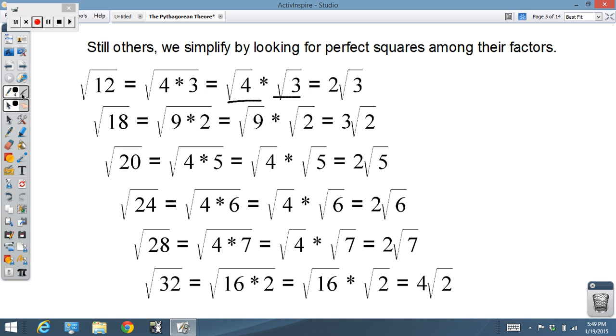Now there's a third category. Others we can simplify because we look for those perfect squares that we can take out, perfect squares that are among their factors. So for example, 12. Well, 12 is 4 times 3, and 4 is a perfect square. So if 12 is 4 times 3, the square root of 12 is the square root of 4 times 3, and that can be broken up into the square root of 4 times the square root of 3. And we know the square root of 4 is 2, so we can simplify √12 to 2√3.